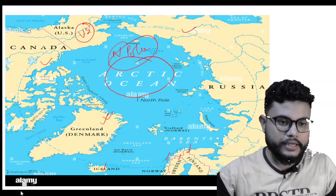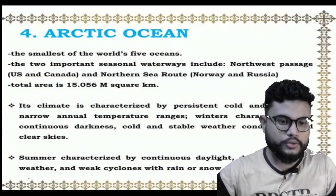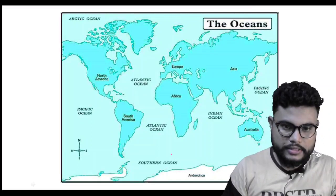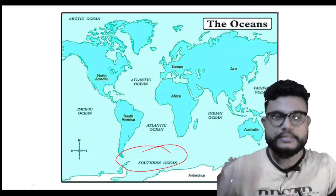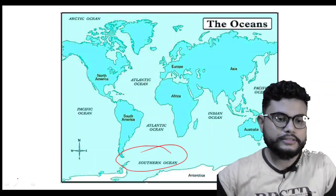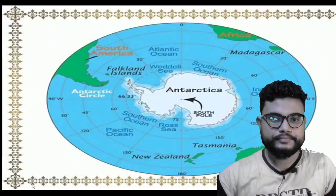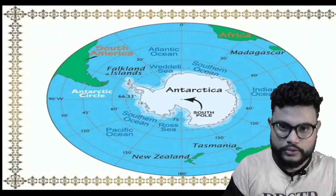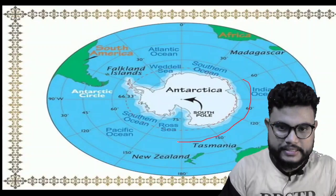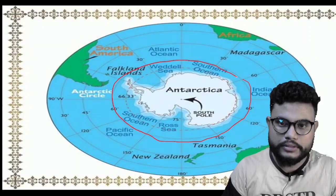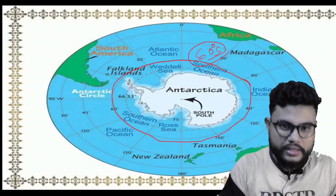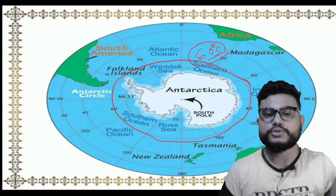Now we will go to the last ocean, which is the Southern Ocean. The Southern Ocean is south of Africa, south of South America, south of Australia, but north of Antarctica. It is also called the Antarctic Ocean because it surrounds Antarctica. It is located at 60 degrees southern latitude.